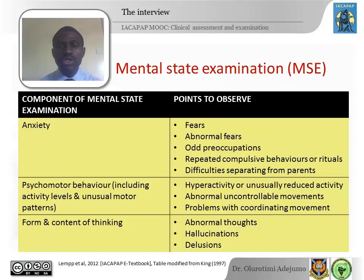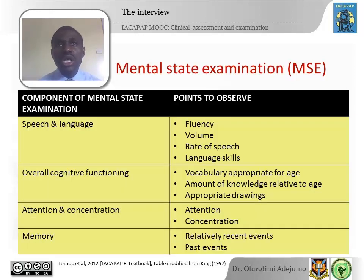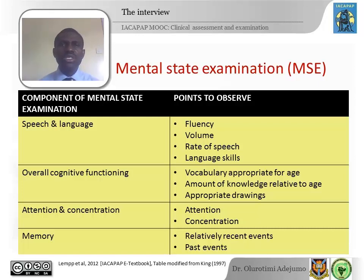You also want to find out about psychomotor behavior — is the child very withdrawn with little activity, or hyperactive and very active? Does the child have any uncontrollable physical movements? How does the child think — what kind of thoughts and concepts does the child express? Are they unusual or odd? Does the child talk about hearing voices or seeing things others can't? How much speech does the child use, and are the words appropriate for their age? If you ask the child to draw, how appropriate are the drawings for the age, and is there a common theme being expressed?